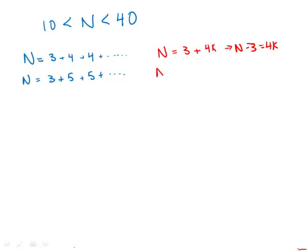We also know that N equals 3 plus some multiple of 5, which I don't know. I'll call it 5m. Or in other words, N minus 3 equals 5m.